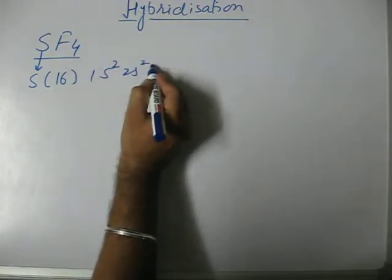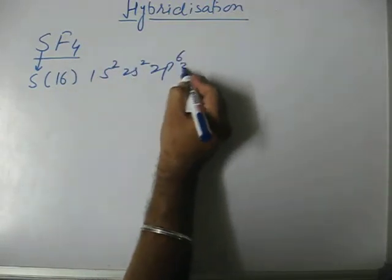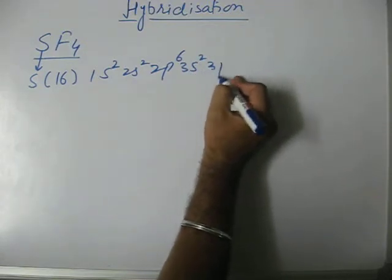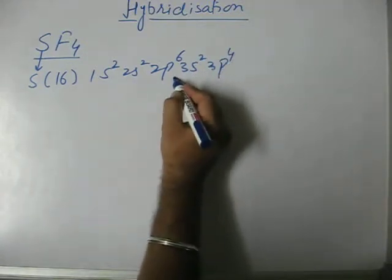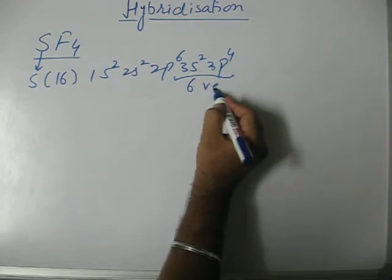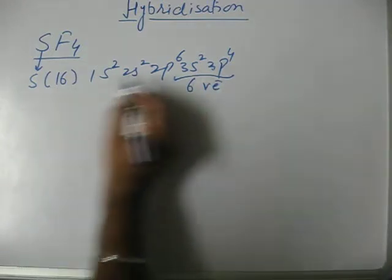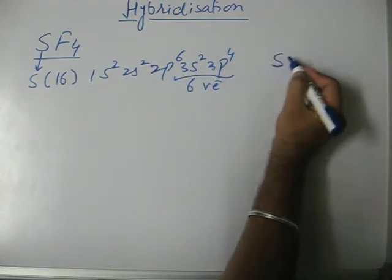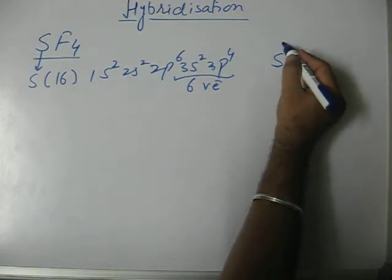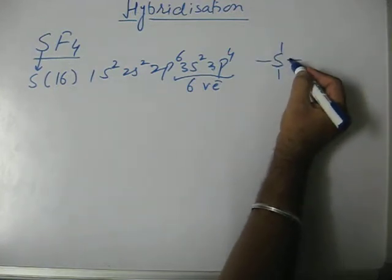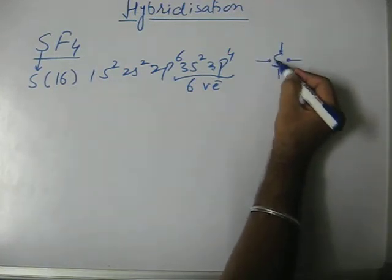From the configuration we see that it has six valence electrons. Out of six valence electrons, sulfur uses four of its valence electrons to form four covalent bonds with fluorine.